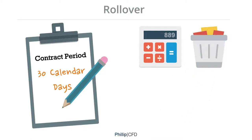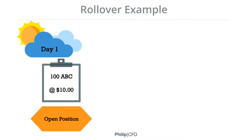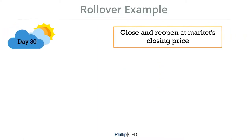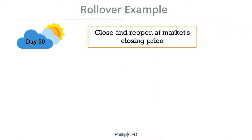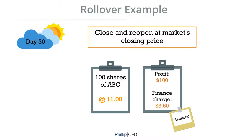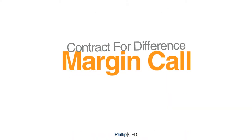Do note that there is no rollover commission and this process has no impact on your P&L. As an example of the rollover process: on day 1, you have 100 ABC contracts purchased at $10. On day 30, the closing price of ABC is $11. We will close and reopen the position at the market's closing price, which is $11. Assuming the profit is $100 and the finance charge is $3.50, these two amounts will be realised and your P&L for this position will reset back to zero.